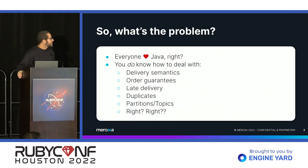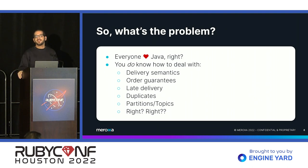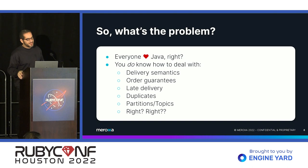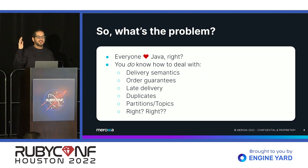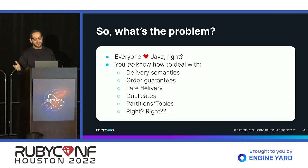What is the problem with stream processing right now? Everyone here, I assume, loves Java — it's your favorite language. Clearly, a Ruby conference must love Java. Nothing wrong with Java, but if you do enough stream processing, you're going to end up with Java somewhere. Kafka is written in Java, Kafka Connect is written in Java, Kafka Streams is written in Java, Pulsar is Java, Spark is Java, Flink is Java. Java is everywhere. That's great if you love Java. If you don't, then that kind of sucks. That's one major obstacle with stream processing, especially for everyone else.